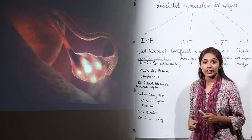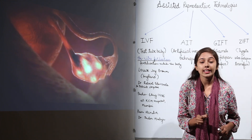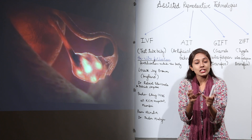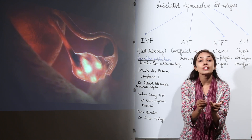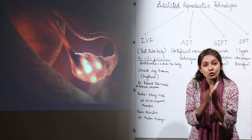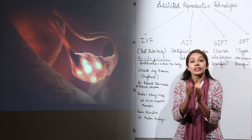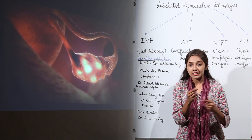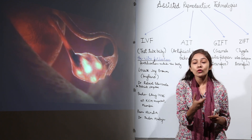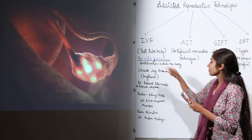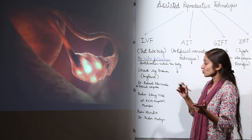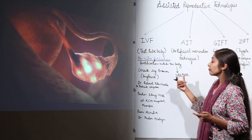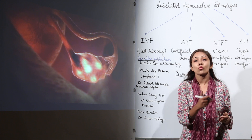We call it a test tube baby because fertilization happens outside the body. Under laboratory conditions, inside test tubes, we have the sperms and the eggs. They are allowed to fuse — one sperm enters the egg and forms the first cell, the zygote. This zygote divides repeatedly to form an embryo, which is then transplanted into the uterus. Inside the mother's body, this embryo turns into a fetus and grows into a normal child.